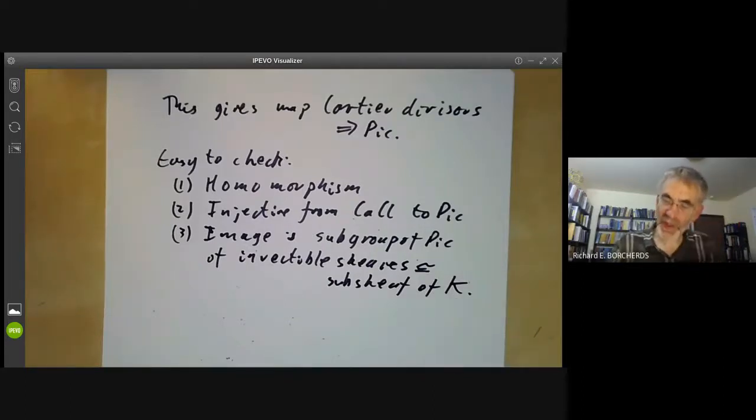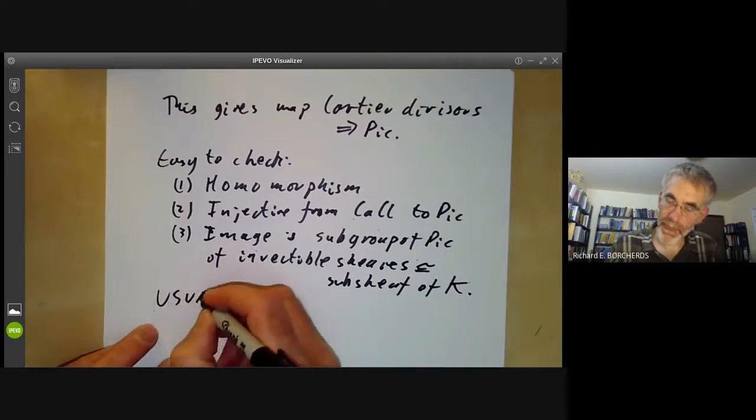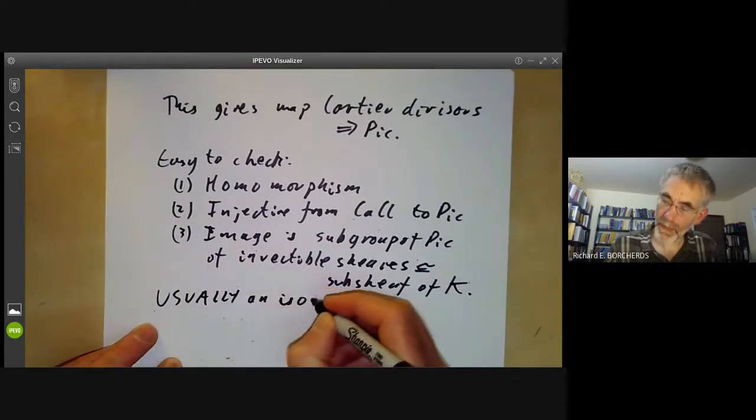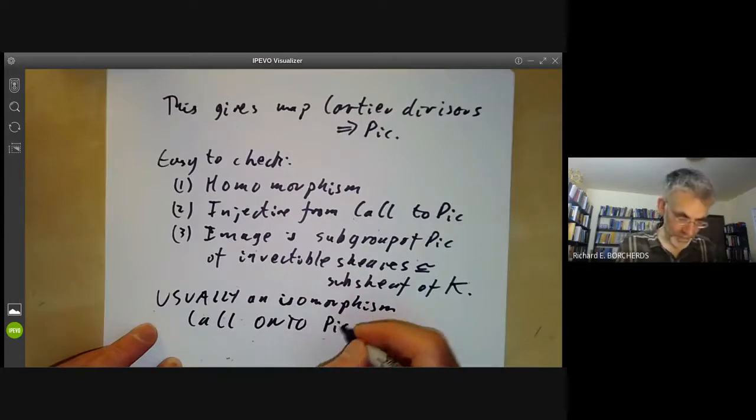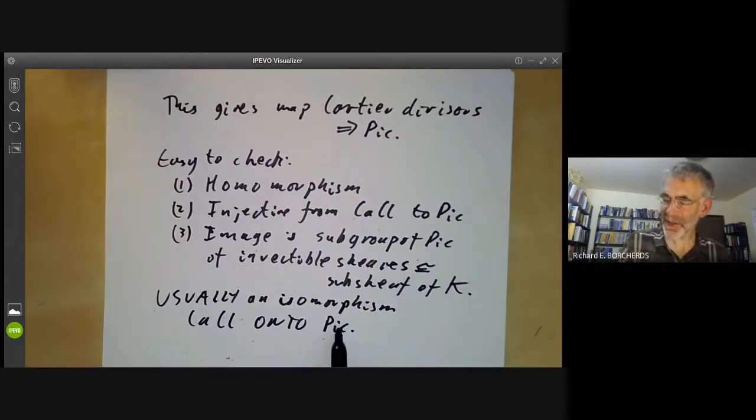It's usually an isomorphism from CACL onto the Picard group. There are some counterexamples where there are elements of the Picard group that aren't in the image of a Cartier divisor, but they tend to be a bit weird. For instance, there's one example found by Kleiman, which starts with Hironaka's example of a non-projective three-dimensional manifold we discussed earlier and produces an example where this map isn't onto. So you're unlikely to encounter examples where this map isn't an isomorphism unless you're searching very hard for counterexamples.